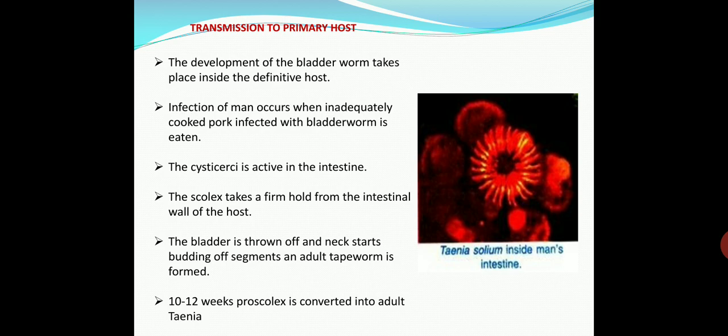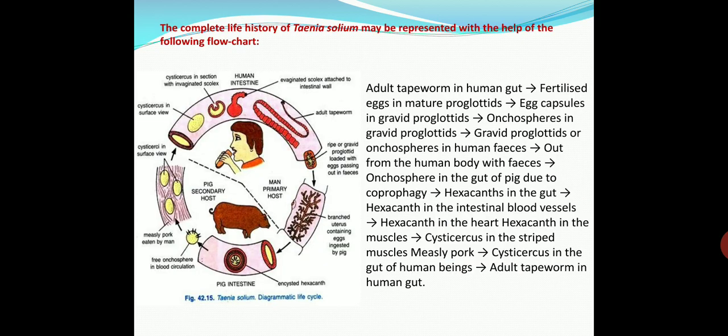In this picture you can see Taenia solium inside the man's intestine, which we call the definitive host or primary host. The next picture shows a flow chart representing the complete life history of Taenia solium.